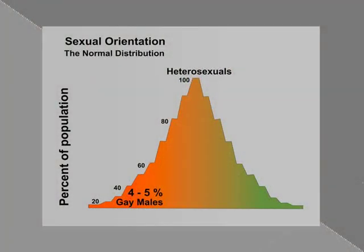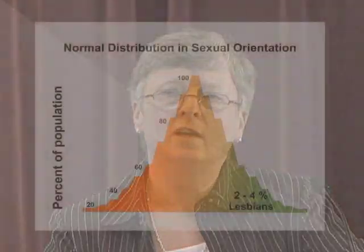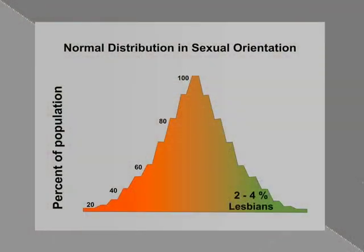If we look at the best studies, they would tell us that there is a prevalence of gay males in the population of about four or five percent — I'm talking about exclusively gay males. If you look at the prevalence of lesbians, it's about two to four percent in the general population.